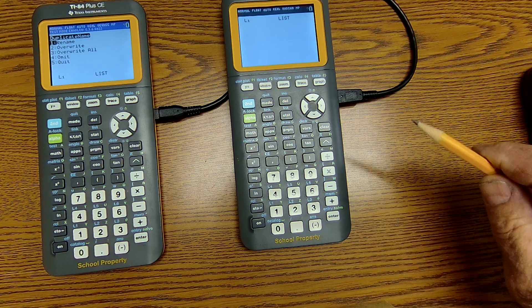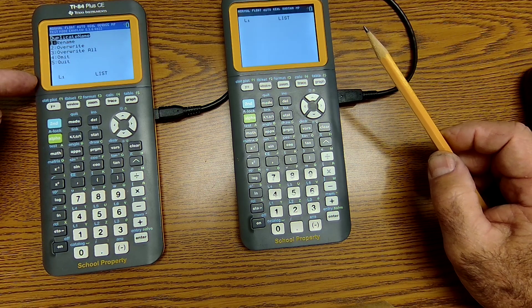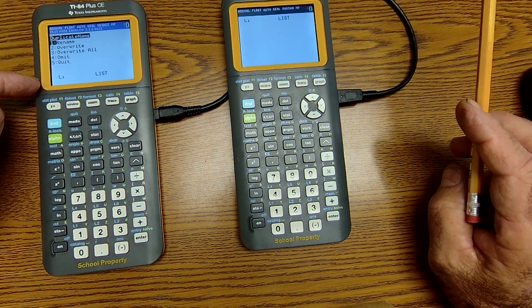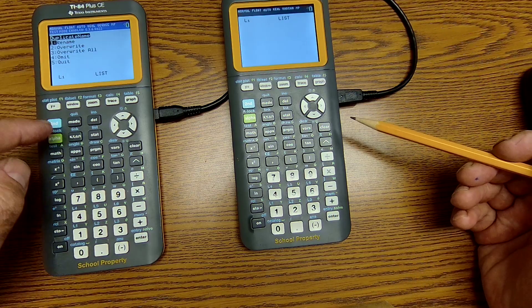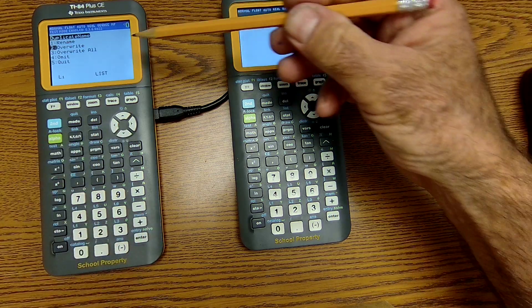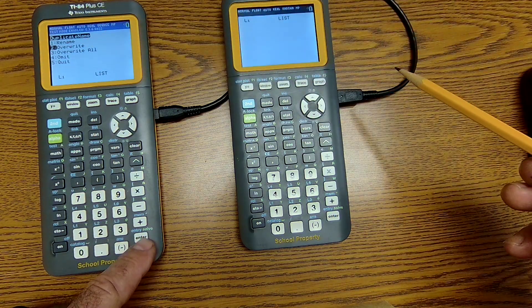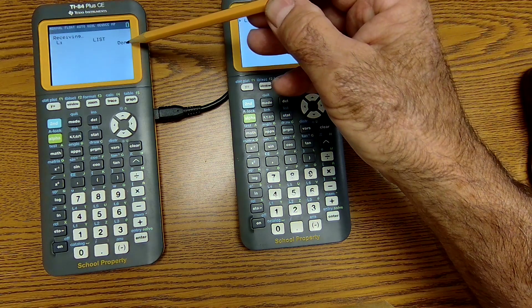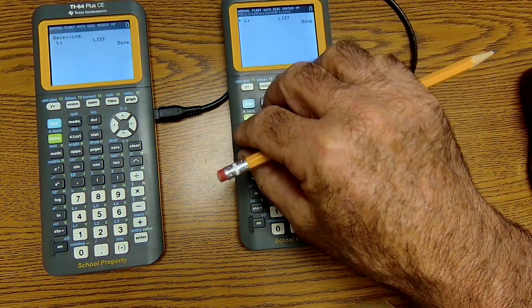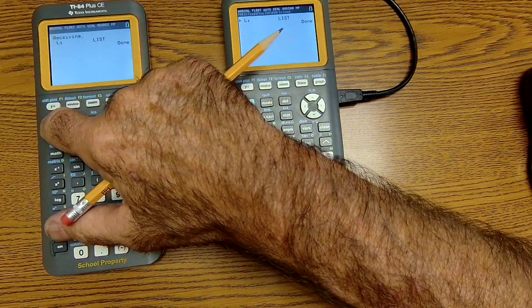And now it's transmitting list one from this calculator to this calculator. There's already a list one in this calculator. So I'm going to have to scroll down here to overwrite and hit enter. It has received that list. It is all done. I could hit clear or quit.